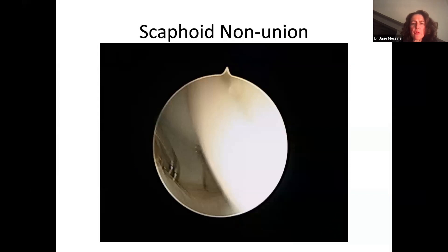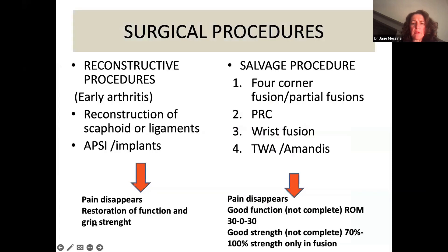In this scaphoid nonunion case, we attempted to show a video of the joint, but unfortunately it didn't play. Nevertheless, we can evaluate the cartilage arthroscopically before performing the reconstructive procedure.